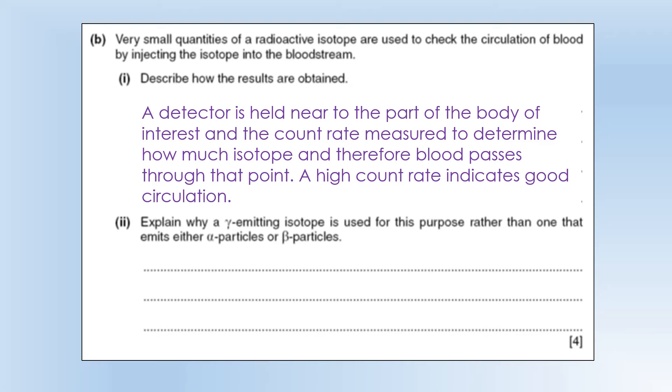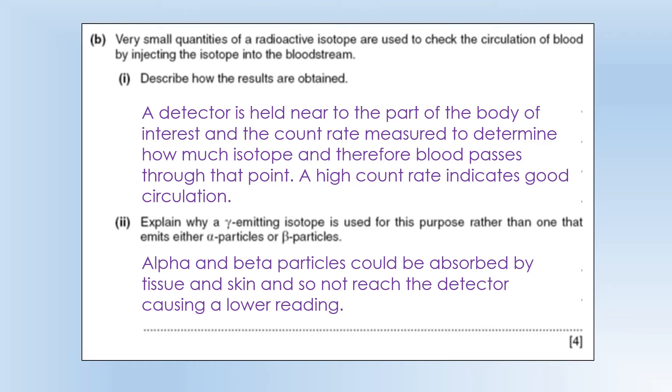Explain why a gamma-emitting isotope is used for this purpose, rather than alpha or beta. Well, it's about its penetration. So alpha-emitting isotope could be absorbed by tissue and by skin, and it's not going to reach the detector, and that's going to make the reading smaller than it should have been.